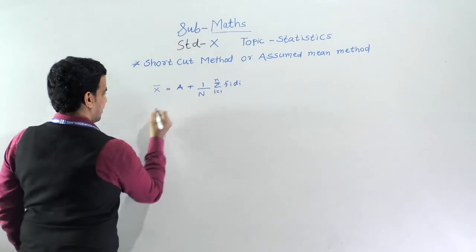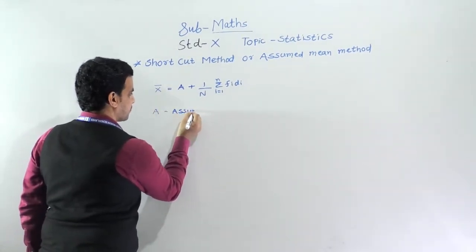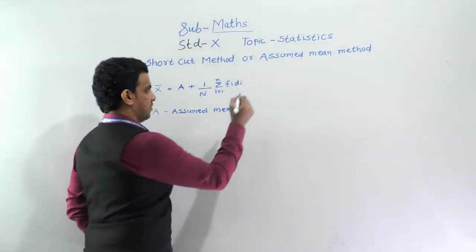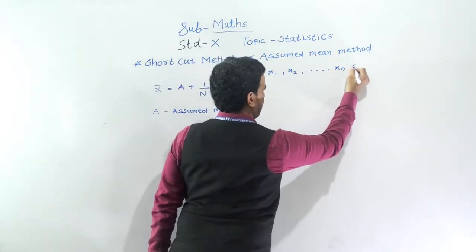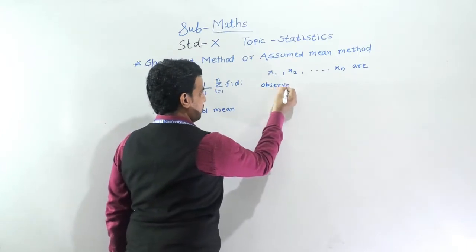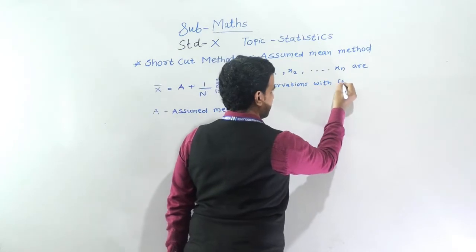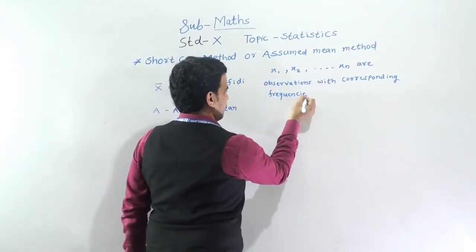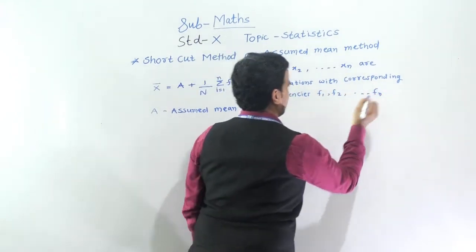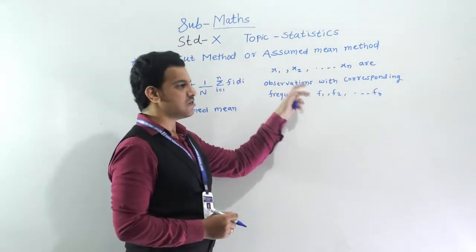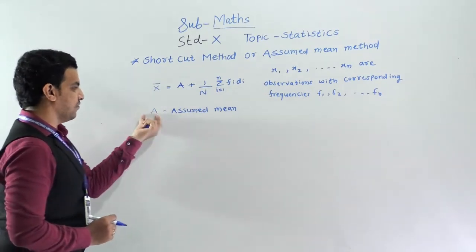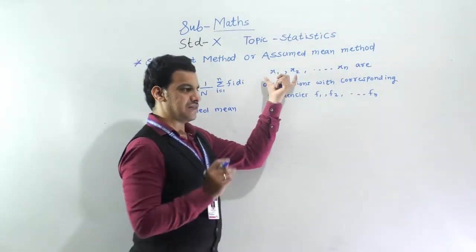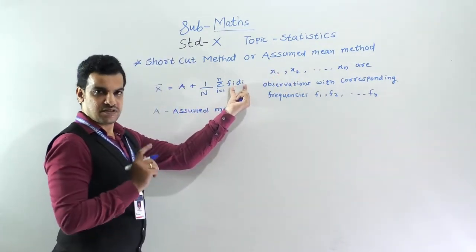So I am going to explain this formula: x̄ = A + (1/n)·Σfi·di, from i=1 to n. Here, A means assumed mean. This assumed mean we have to choose from the xi observations. If x1, x2, up to xn are observations with corresponding frequencies f1, f2, up to fn, and observations and frequencies are very large, then we use this formula. A is chosen from xi, not from fi, such that the deviations are small.